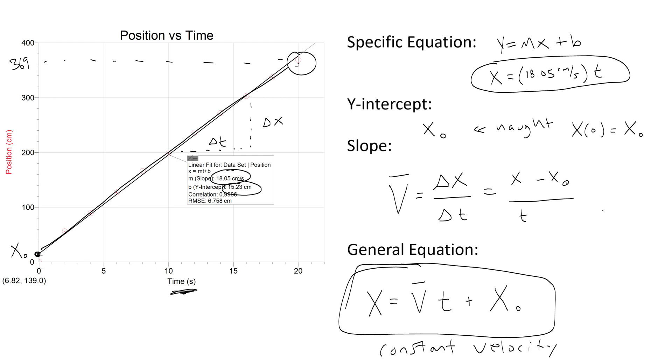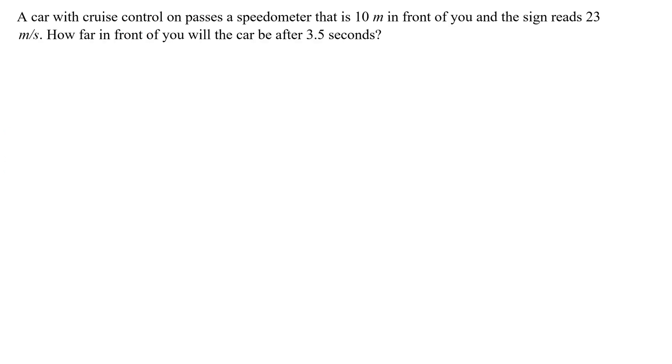Let's do an example. A car with cruise control on, so cruise control means that it's moving with a constant speed or constant velocity, passes a speedometer that is 10 meters in front of you and the sign reads 23 meters per second. How far in front of you will the car be after 3.5 seconds? Here I'm going to identify some of the information that is given to me. 10 meters, that's the initial position so I would write x naught of the car. How far in front, that means I want to find x, the final position. It gives me an amount of time, 3.5 seconds, so we could say delta t or again if you just want to call it t is 3.5 seconds.